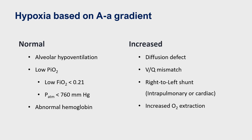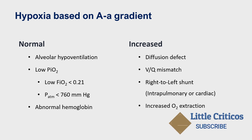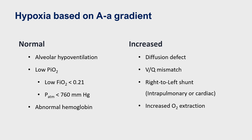In summary, hypoxia can be classified based on the alveolar-arterial gradient. If a patient has a normal gradient, it is probably related to alveolar hypoventilation, low partial pressure of inspired oxygen, or abnormal hemoglobin with poor oxygen-carrying affinity. If the gradient is increased, it probably reflects an alveolar-capillary disease resulting in a diffusion defect, ventilation-perfusion mismatch, right-to-left shunt — which could be intrapulmonary or intracardiac — or increased oxygen extraction conditions.